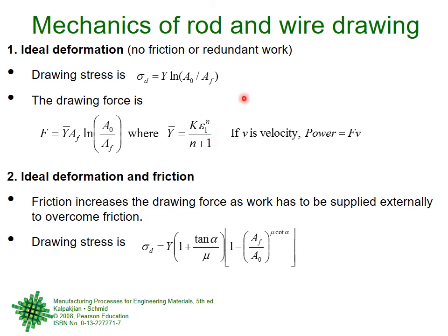Similarly to extrusion, if v is the velocity then power equals force times velocity — basic physics. Force (stress multiplied by final area) times velocity (meters per second) gives power — energy per unit time. This is a simple way of summarizing all the major equations in wire drawing, which are very similar to the equations for extrusion.